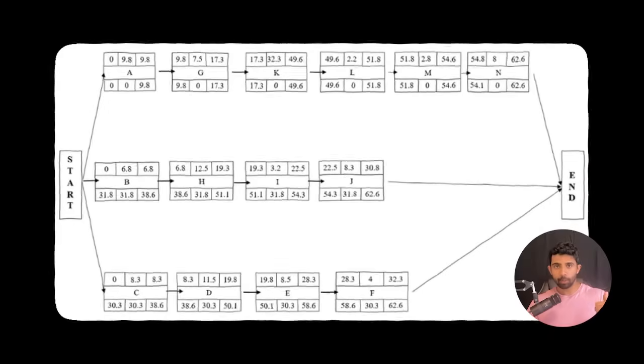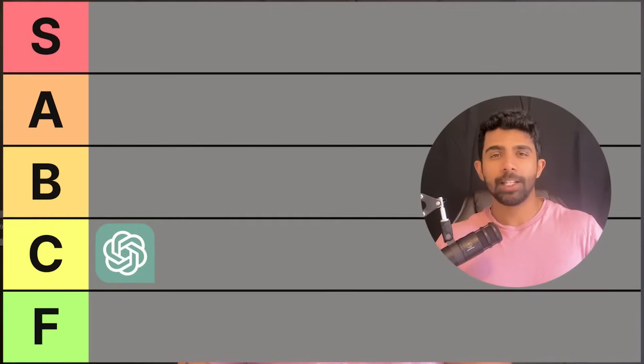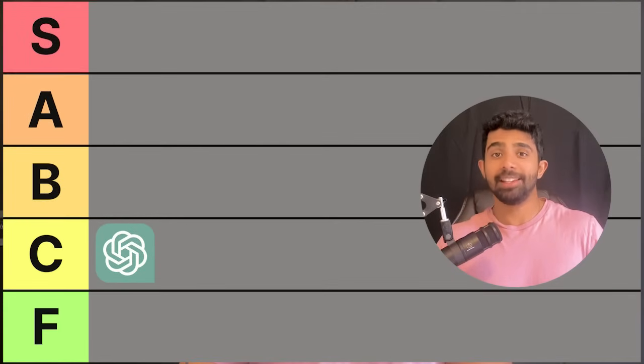If you put this project on LinkedIn, PyTorch Peter might respect you, but a hiring manager isn't going to be impressed. Here's how to build it: first, implement the forward and backward pass in NumPy. Second, train the model on a simple dataset like MNIST. Third, bonus points if you go beyond MNIST — try a dataset with weirder images. Final verdict: it's great for learning, but not for impressing recruiters. B tier.